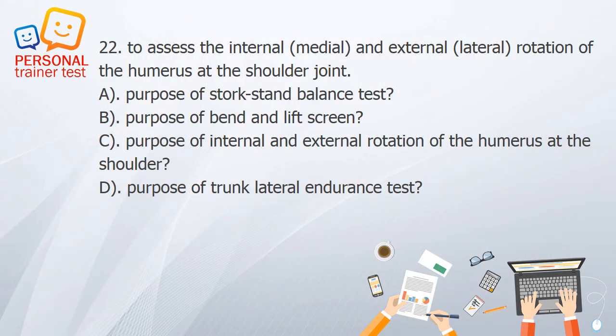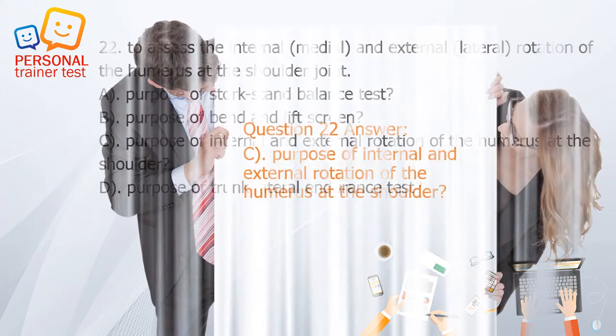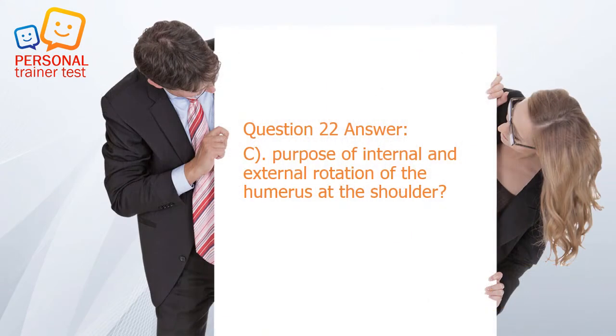Question 22. A. Purpose of stork stand balance test. B. Purpose of bend and lift screen. C. Purpose of internal and external rotation of the humerus at the shoulder. D. Purpose of trunk lateral endurance test. Answer: C. To assess the internal (medial) and external (lateral) rotation of the humerus at the shoulder joint.